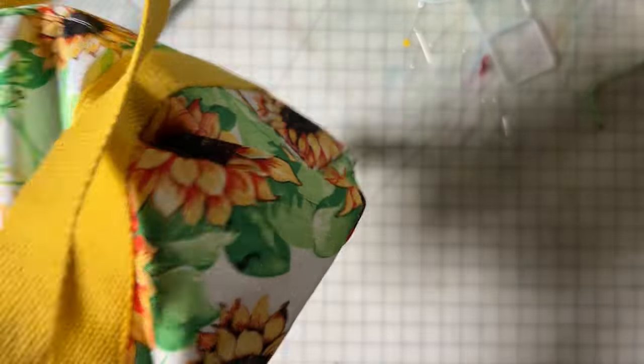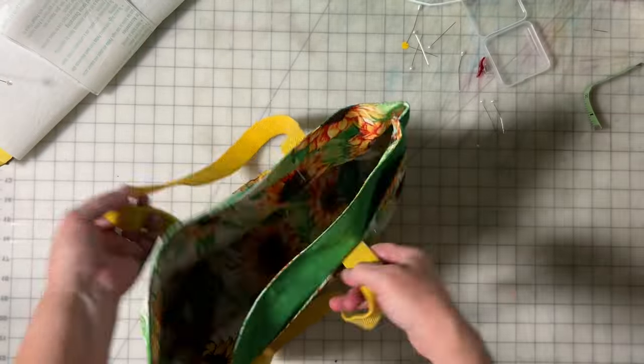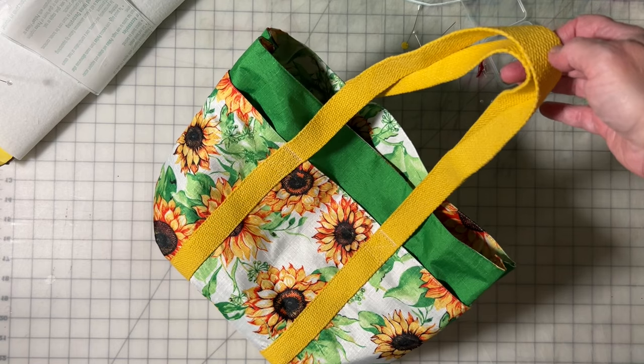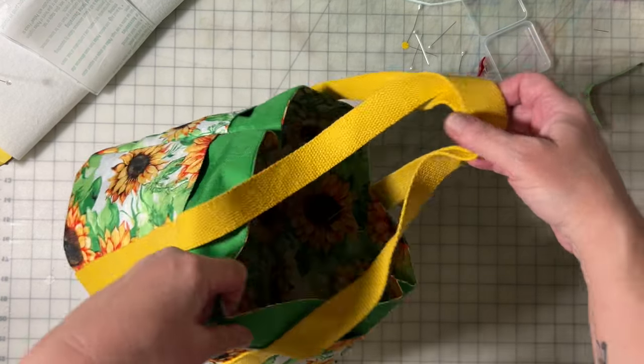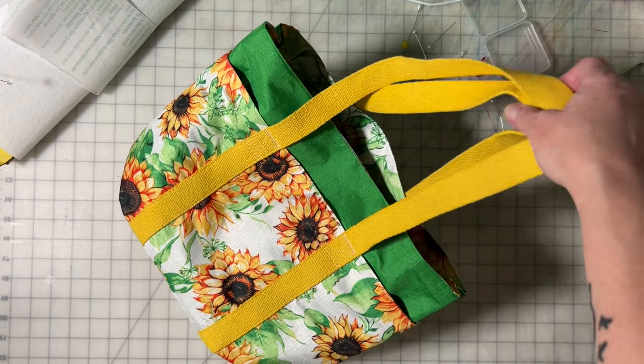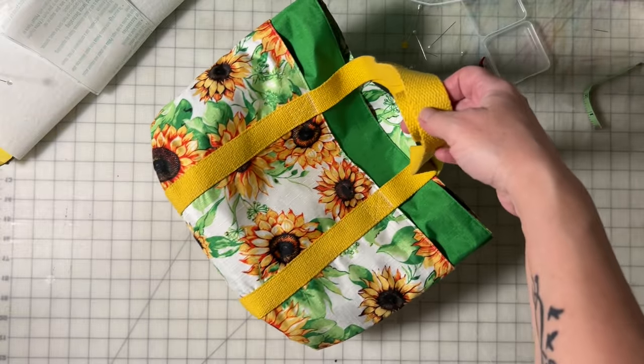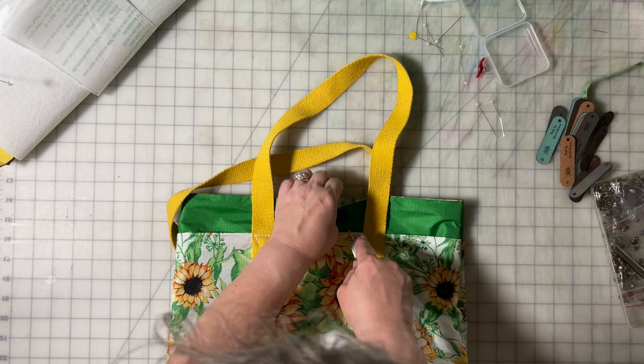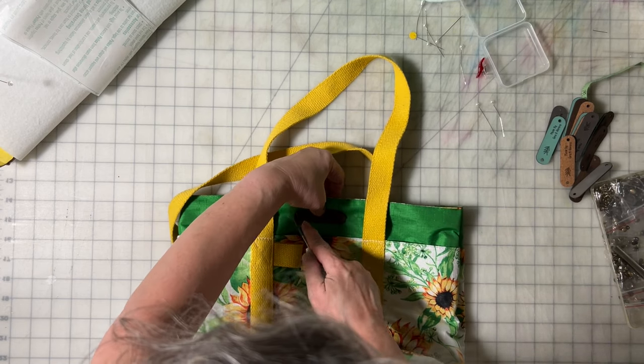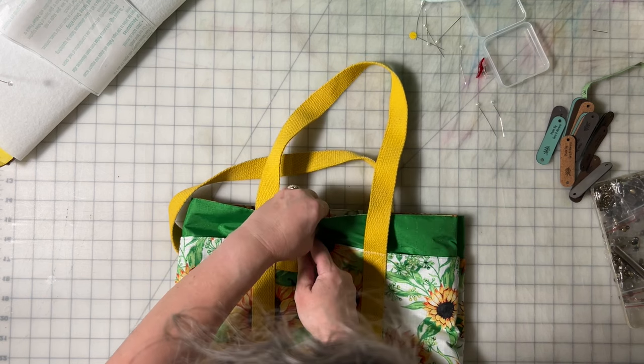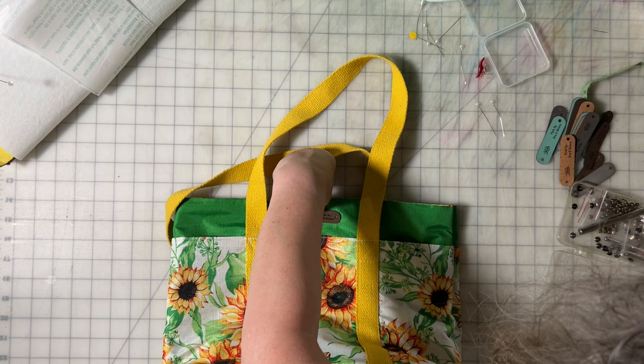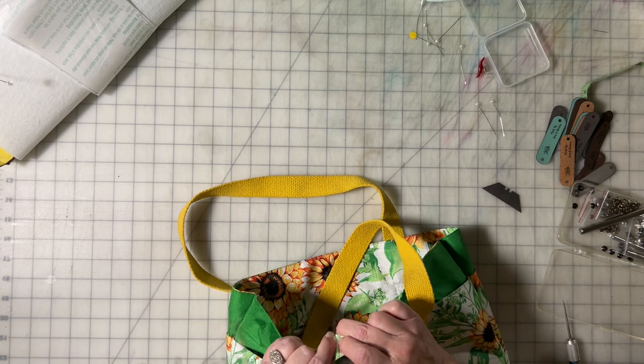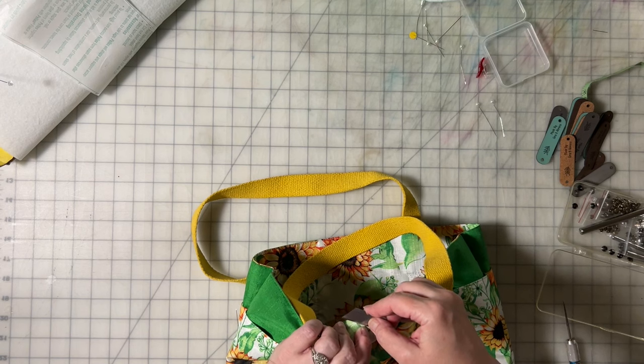So now we can turn it right side out. Oh, how cute is that! That's adorable. I do think I'm going to stick a tag on here. I have these tags that I usually use on my crochet, but I've been sticking them on my bags. So let me go grab one and I'll be right back.